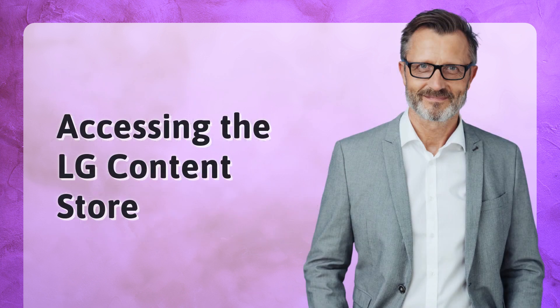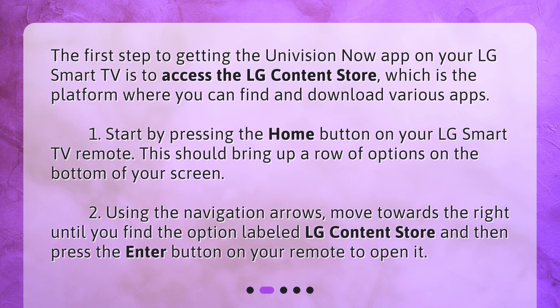Accessing the LG Content Store. The first step to getting the Univision Now app on your LG Smart TV is to access the LG Content Store, which is the platform where you can find and download various apps. 1. Start by pressing the Home button on your LG Smart TV remote. This should bring up a row of options on the bottom of your screen. 2. Using the navigation arrows, move towards the right until you find the option labeled LG Content Store, and then press the Enter button on your remote to open it.